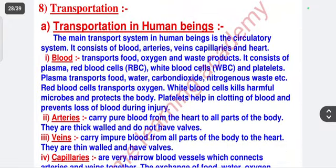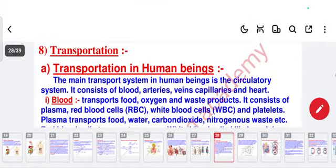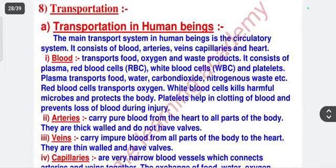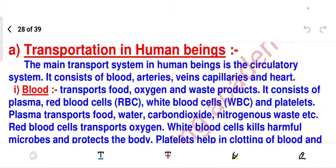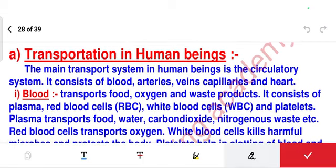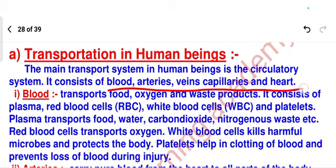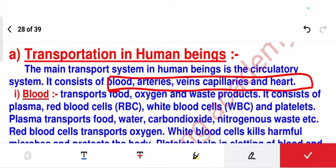So let's get started. Transportation in human beings mainly means movement, and the main transport system is the circulatory system. It consists of blood, arteries, veins, capillaries, and heart. Now we are going to learn about blood, arteries, veins, capillaries, and heart — what do you mean by each of these.